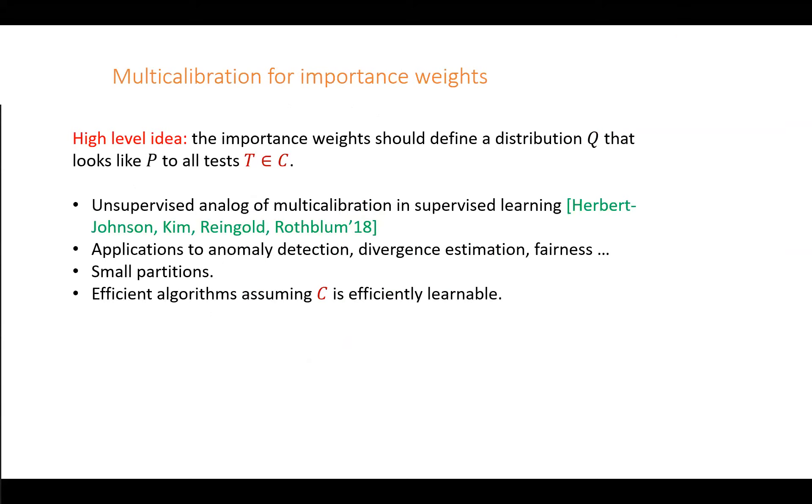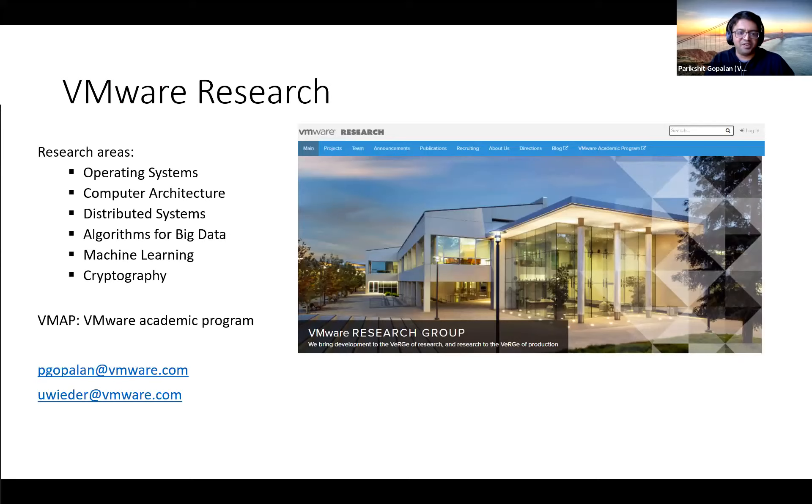This is an unsupervised analog of the notion of multi-calibration that Michael Kim just talked about. What we show is that this gives you some really nice applications to things like anomaly detection, divergence estimation, and fairness. You can get surprisingly small partitions that have nothing to do with the class of tests you're trying to fool, and these are computable efficiently, assuming that your class of tests is learnable. Let me just end by saying that we are VMware Research, based in Palo Alto. Udi and I are on this meeting and are happy to talk to you about anything. Thanks a lot.